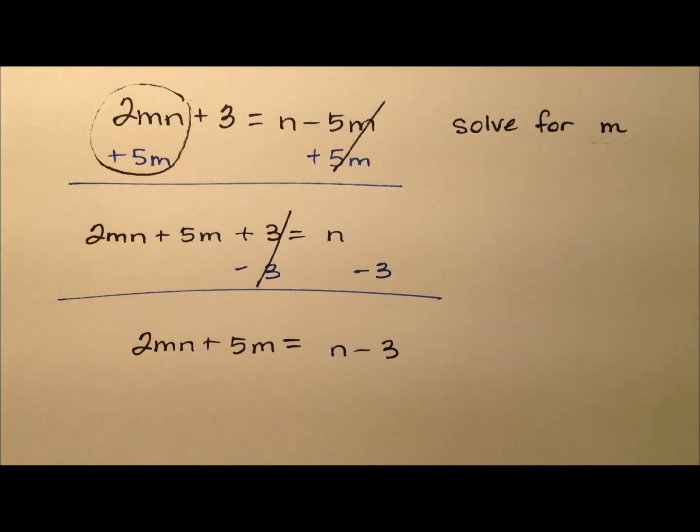Okay. So we're trying to solve for m, but we notice that we have multiple terms that include an m and they're not like terms. So what we need to do is factor this m out. Basically, it's going to be using backwards distributive property. And then we'll see what we have.